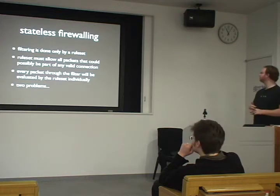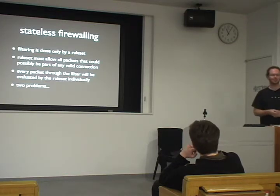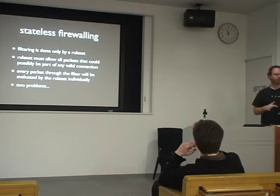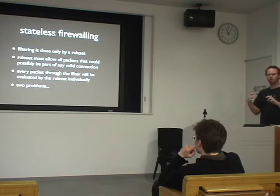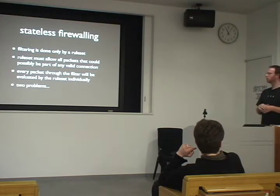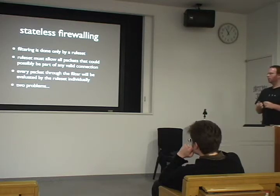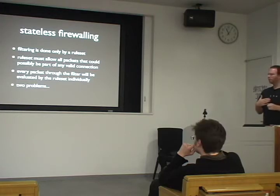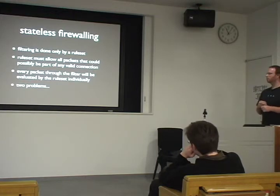With stateless firewalling, filtering is only done by a rule set — a list of rules that say if traffic matches these characteristics, such as networks, IP addresses, ports, which protocol, the TTL on the packet, then it's allowed through or blocked. With stateless firewalling, you have to construct a rule set that allows traffic to flow in both directions for a valid connection. Every packet through the filter will be evaluated by the rule set individually.